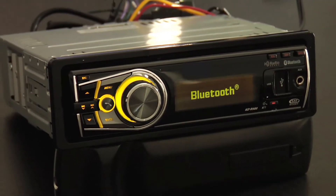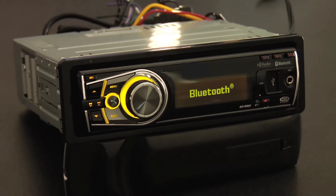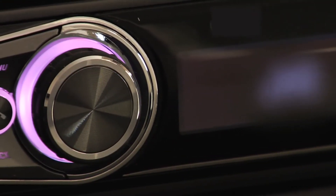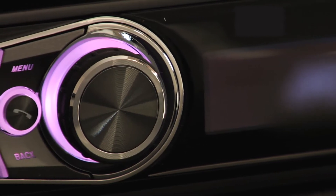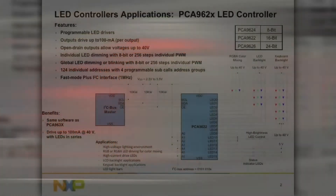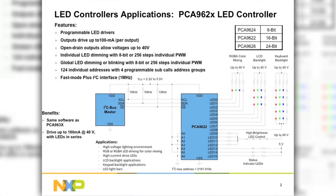This kit provides a simple car radio example which illustrates the use of an 8-channel LED controller for backlighting control on the radio display and buttons. The car radio demo uses the PCA9624, which is a fast mode plus I2C bus-controlled 8-channel LED driver.